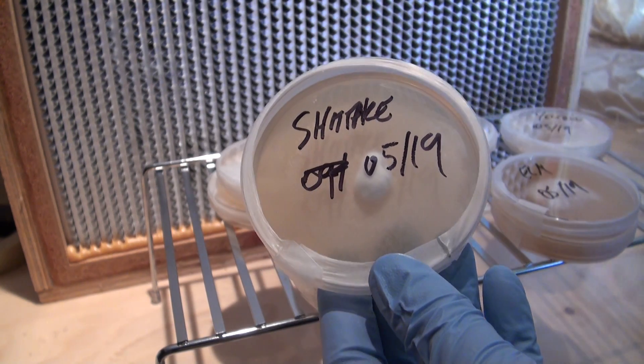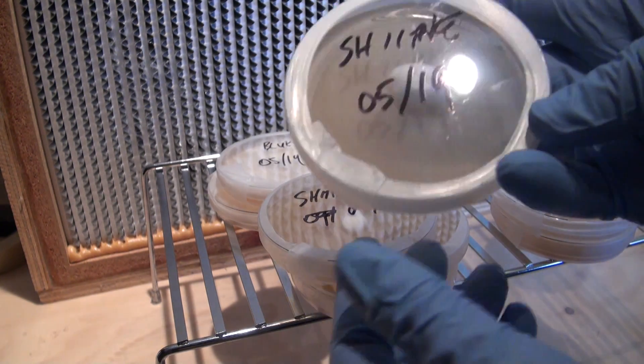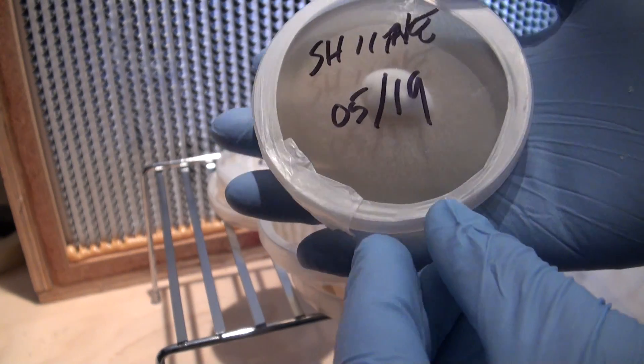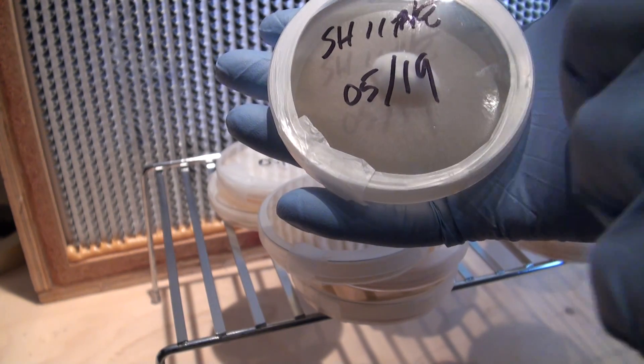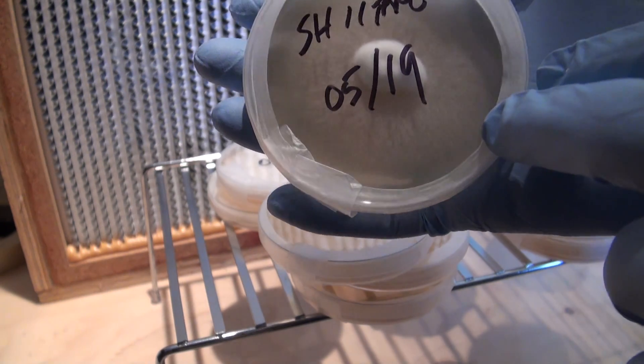Shiitake mushroom mycelium will be wispy at first and eventually consolidate thicker, and it actually eventually turns brown if you leave it on the plate long enough.